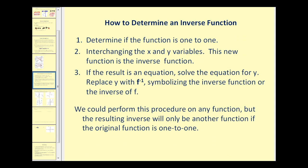Next, let's talk about how we determine an inverse function. First, we have to determine if the function is one-to-one. If it's not one-to-one, it will not have an inverse function. Step two: interchange the x and y variables — this new function is the inverse function. If the result is an equation, we solve for y and replace y with our inverse function notation. Of course, the resulting inverse will only be another function if the original function is one-to-one.